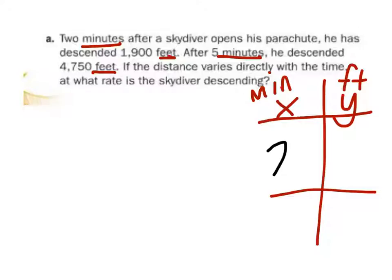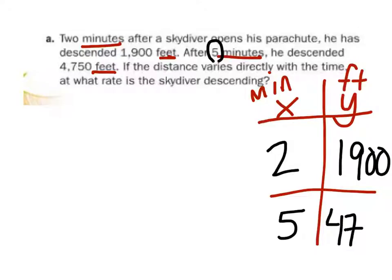So, after two minutes, how many feet? 1,900. Very good. After five minutes, now how many feet? 4,750. All right. So, in order to find out if the distance varies directly, we need to find out if it actually is a direct variation.